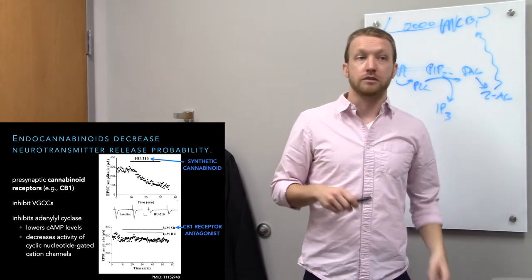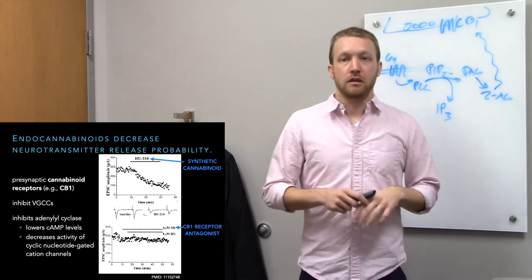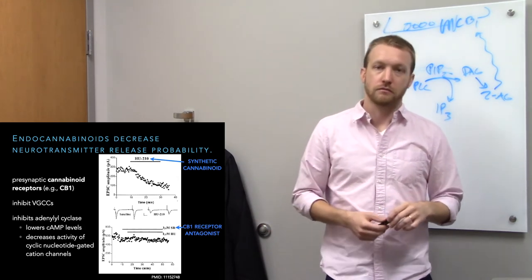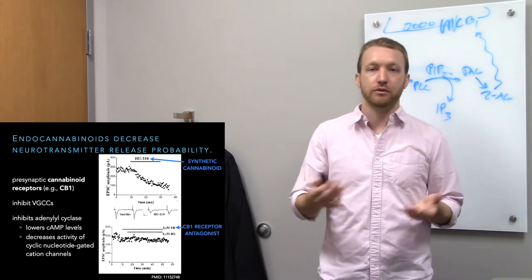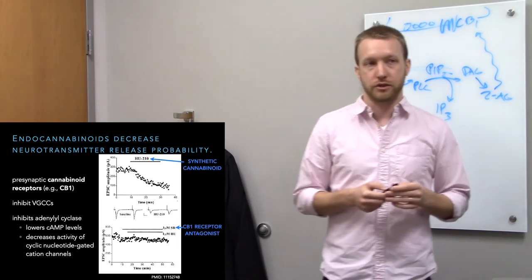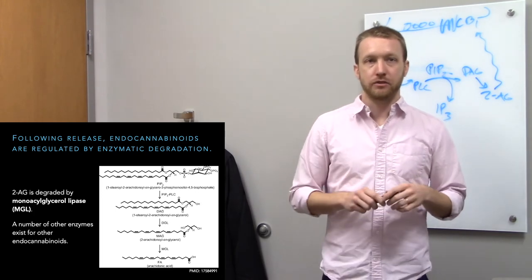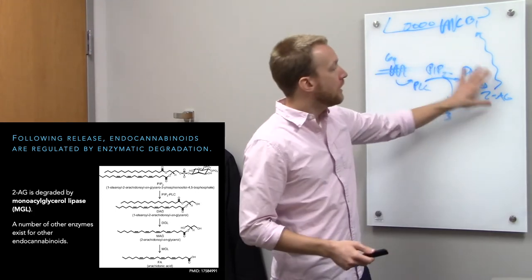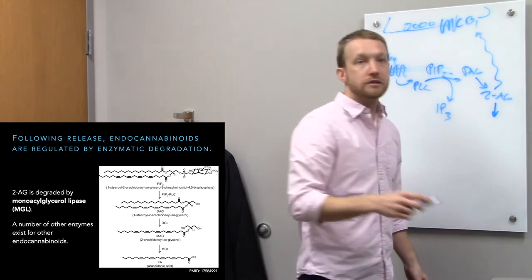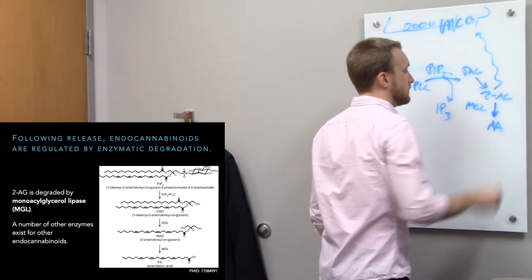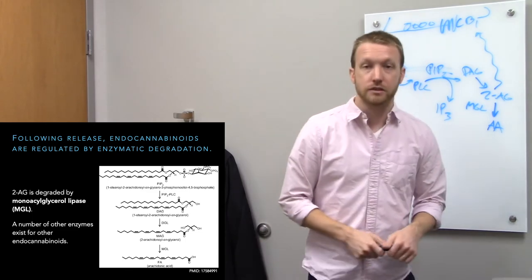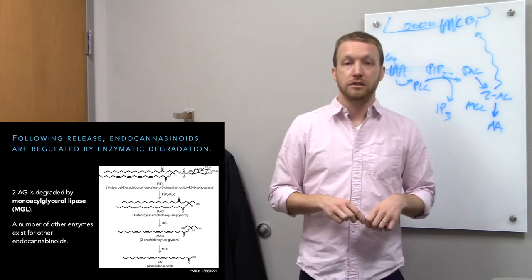We have a decrease in release probability, so synapses aren't as likely to work. This might explain why cannabinoids affect attention and memory function negatively — in order to remember and pay attention, we have to have reliable synaptic signaling, and decreasing release probability decreases the reliability of synaptic function. After release, we have to clean this up too: monoacylglycerol lipase breaks down 2-AG to form arachidonic acid. This is not an endocannabinoid, but it can be modified to form other compounds such as the vasodilators we saw in lecture five.